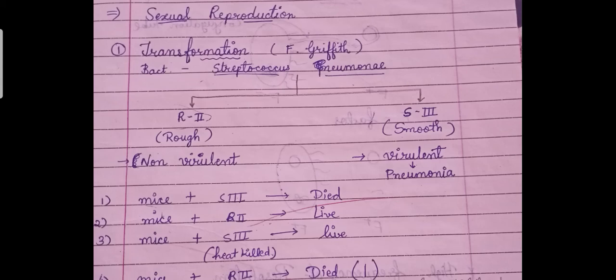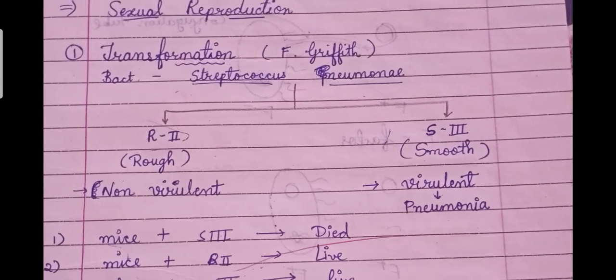Streptococcus pneumoniae had two strains — two forms. One was the R2 strain, meaning rough bacteria, because the surface was rough. The second was the S3 strain, which had a smooth capsule, so it was called smooth bacteria. The rough bacteria had no protective layer.